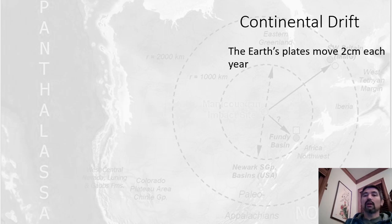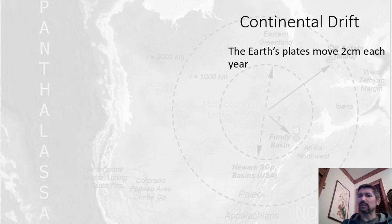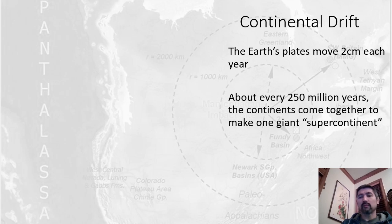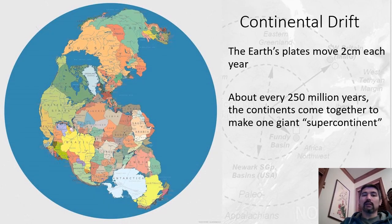So, continental drift. Scientists have been able to figure out exactly how far our continents move every year — it's about two centimeters. It doesn't seem like a lot, but over a geological timescale of millions and millions of years, those continents can actually move quite a bit. In fact, once every 250 million years, all the continents usually crash together to form one giant supercontinent. The last supercontinent that existed was called Pangea.